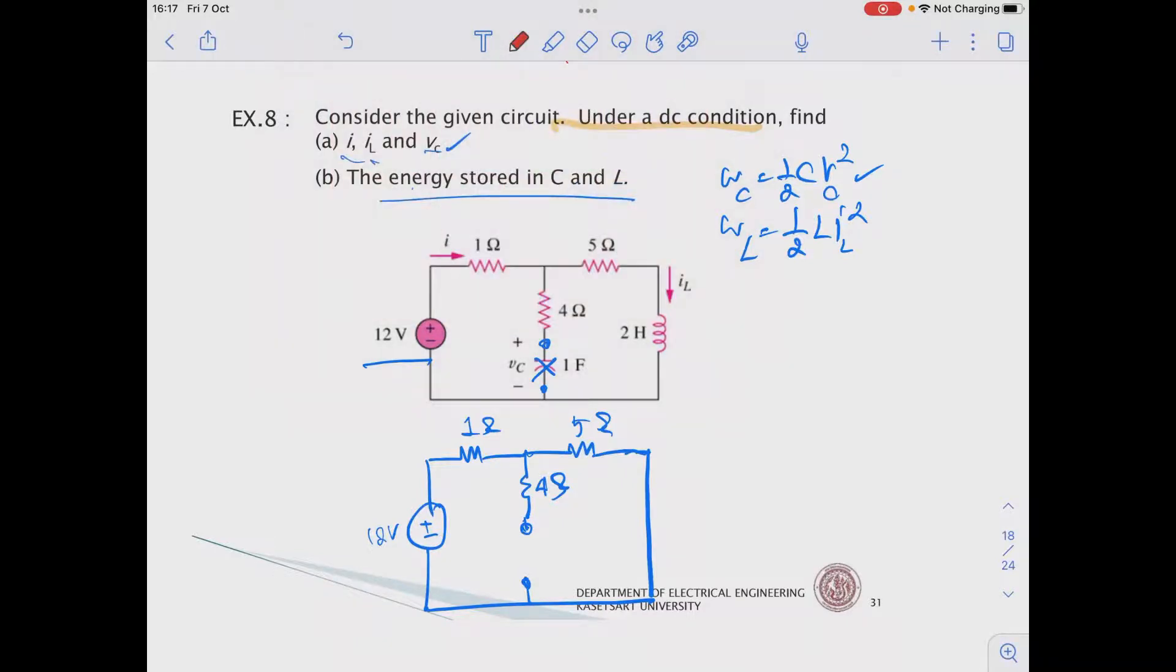The variable that we need to obtain is this current I, this voltage across this one and the current passing through this branch, which is IL. Based on this, it's open circuit. So there is no current passing through this 4 ohm.